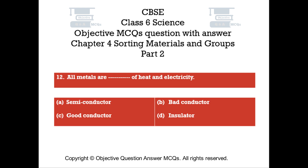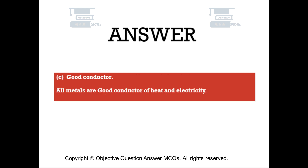Question number 12. All metals are dash of heat and electricity. Option A: Semiconductor. Option B: Bad Conductor. Option C: Good Conductor. Option D: Insulator. The right answer is Option C — Good Conductor. All metals are good conductors of heat and electricity.